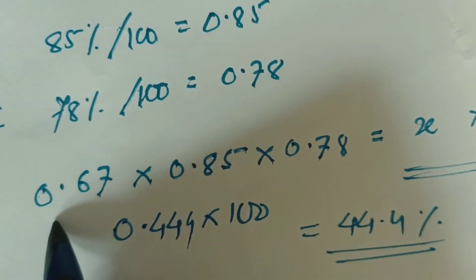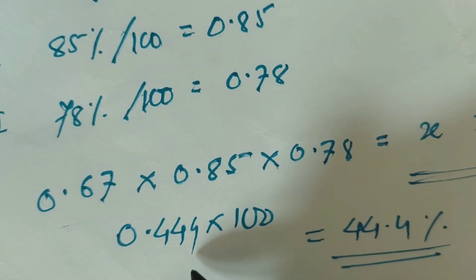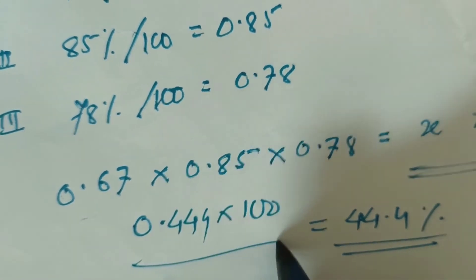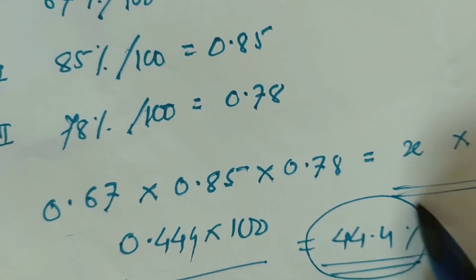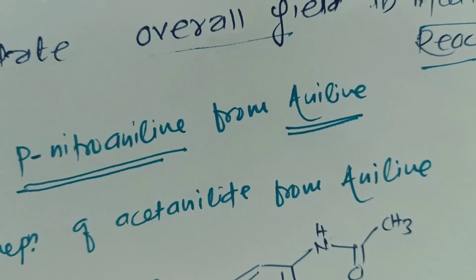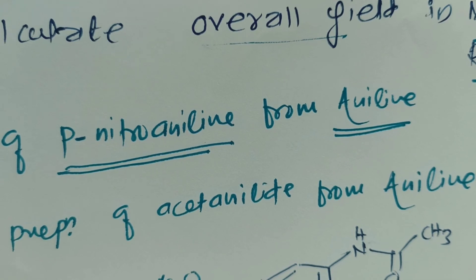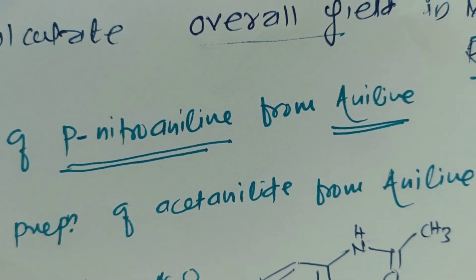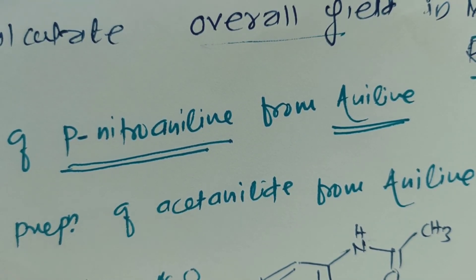Now if you multiply all these things, it becomes 0.44 into 100, which gives 44.4%. That is the overall yield of your para-nitro aniline, which is prepared from aniline via multi-step synthesis. Thank you.